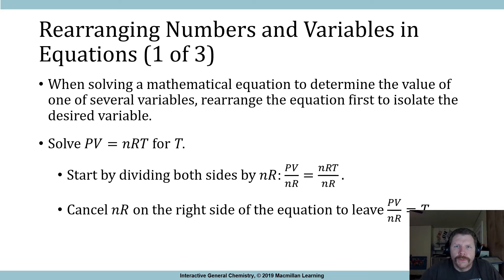Rearranging numbers and variables in equations, part 1 of 3. When solving a mathematical equation to determine the value of one or several variables, rearrange the equation first to isolate a particular variable. Later on this semester, we'll be working with something known as the ideal gas equation or the ideal gas law: PV equals nRT. That's something that we will be using quite often, and what we're going to have to do with that is solve for T. So we'll take this equation and start out by dividing by nR on both sides, which is displayed here.